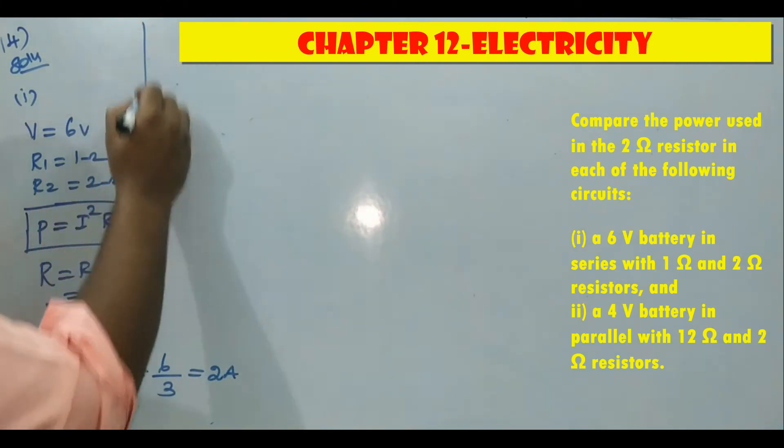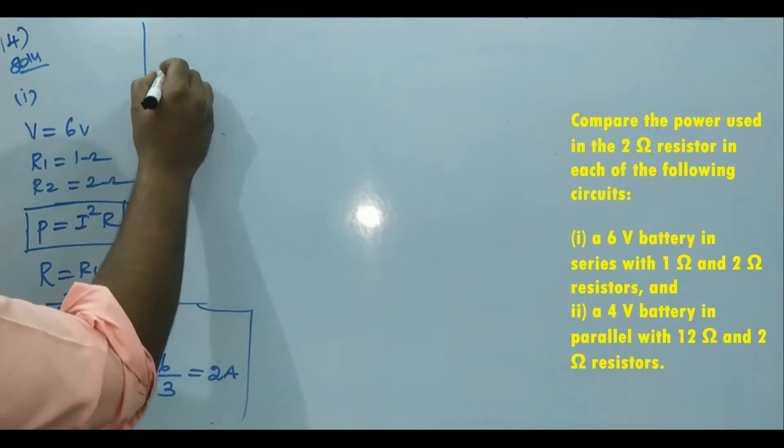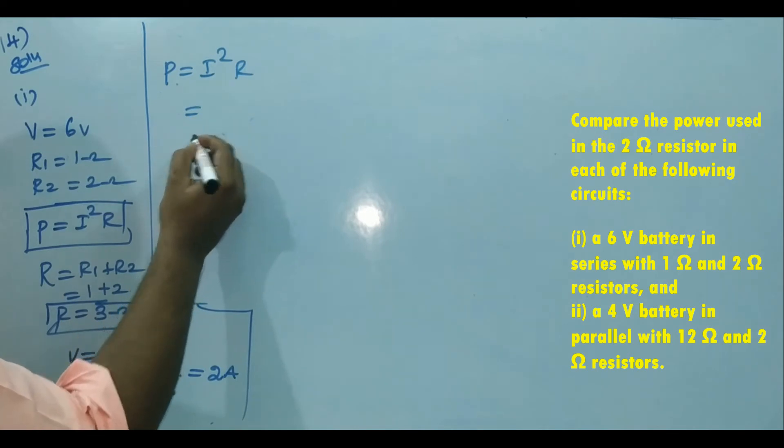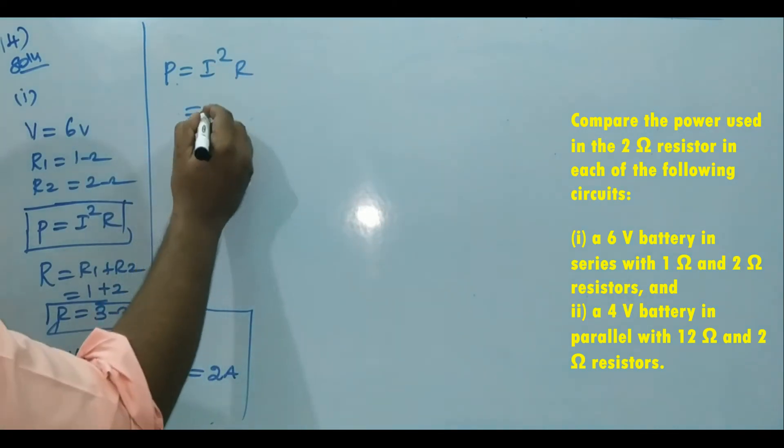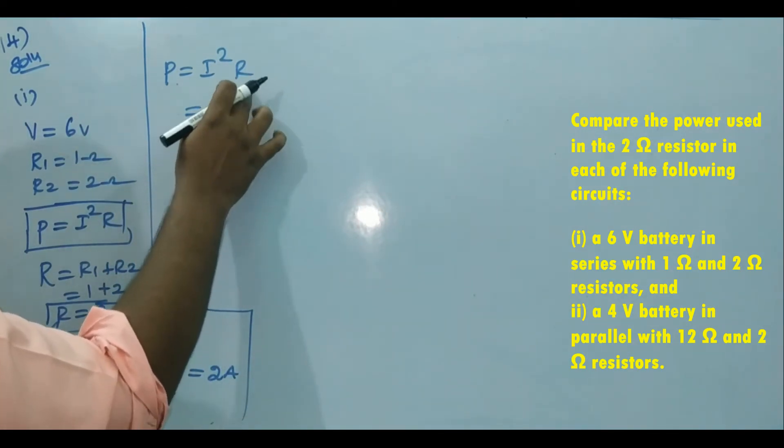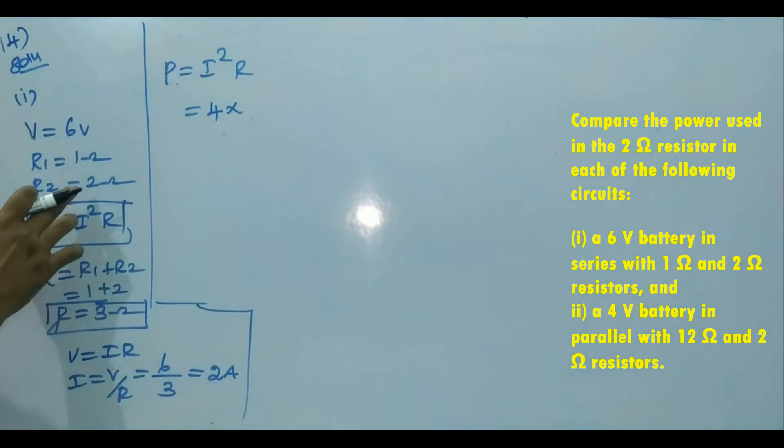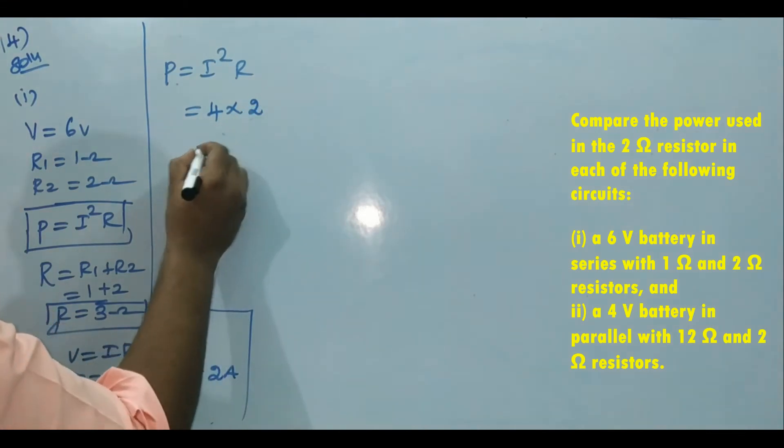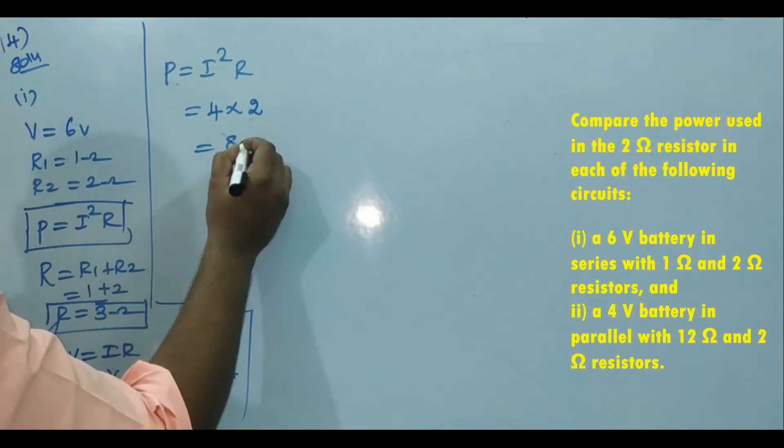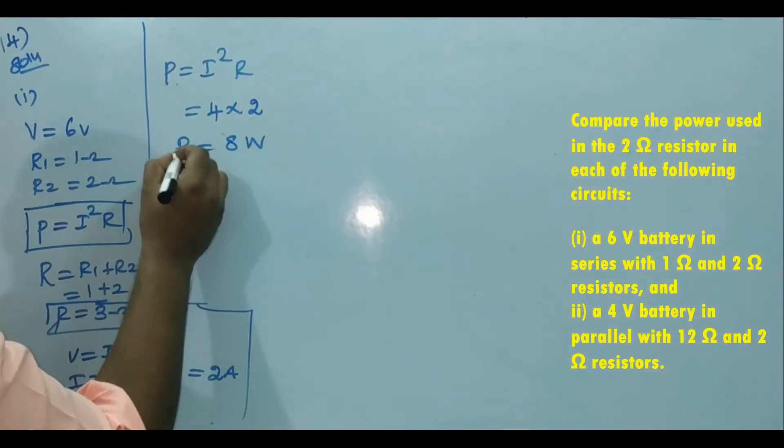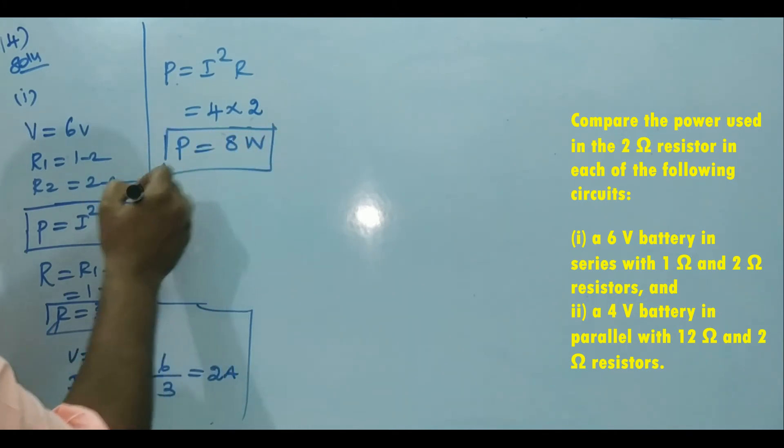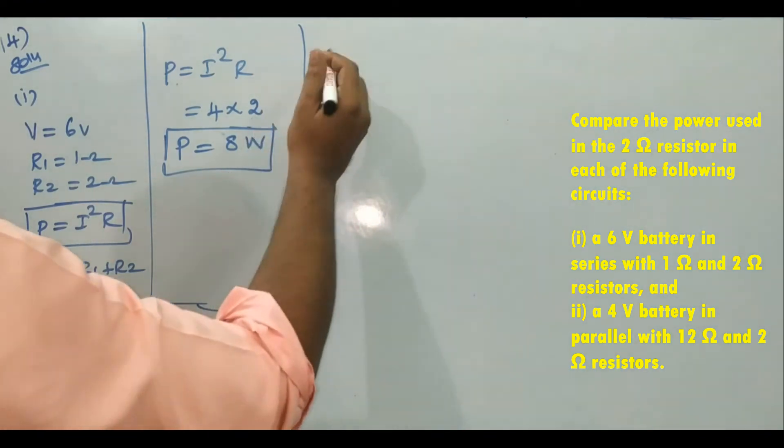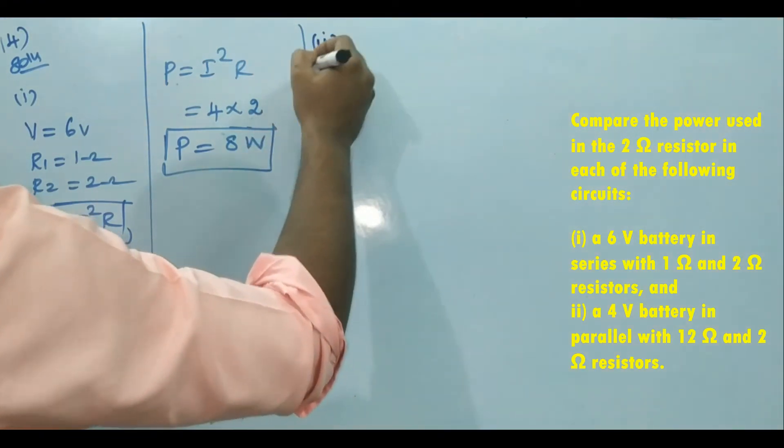Now we got I value, then substitute this formula: P is equal to I squared R. So I is 2, I squared is 4, 4 into R is 2 ohm, because they're asking what is the power consumed in the 2 ohm resistance. So R is 2, then 4 into 2 is 8 watt, the power for first subdivision.